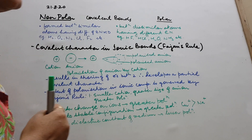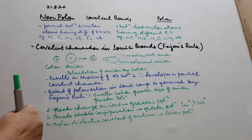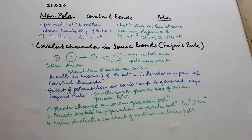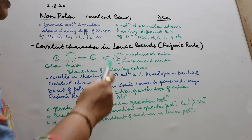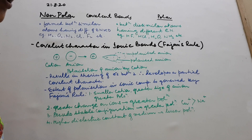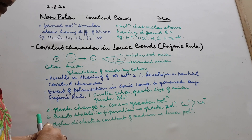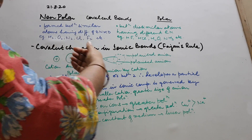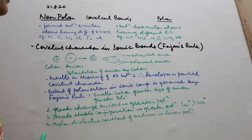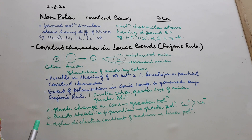Fajan actually said that greater the polarization, greater will be the covalent character. More specifically: greater the polarization of the anion by the cation, greater will be the covalent character. Polarization means pulling electrons towards the cation and repelling the nucleus of the anion, causing distortion in the geometry. When the electron cloud is pulled towards the cation, this results in the sharing of some electrons between the two, and therefore develops a partial covalent character.